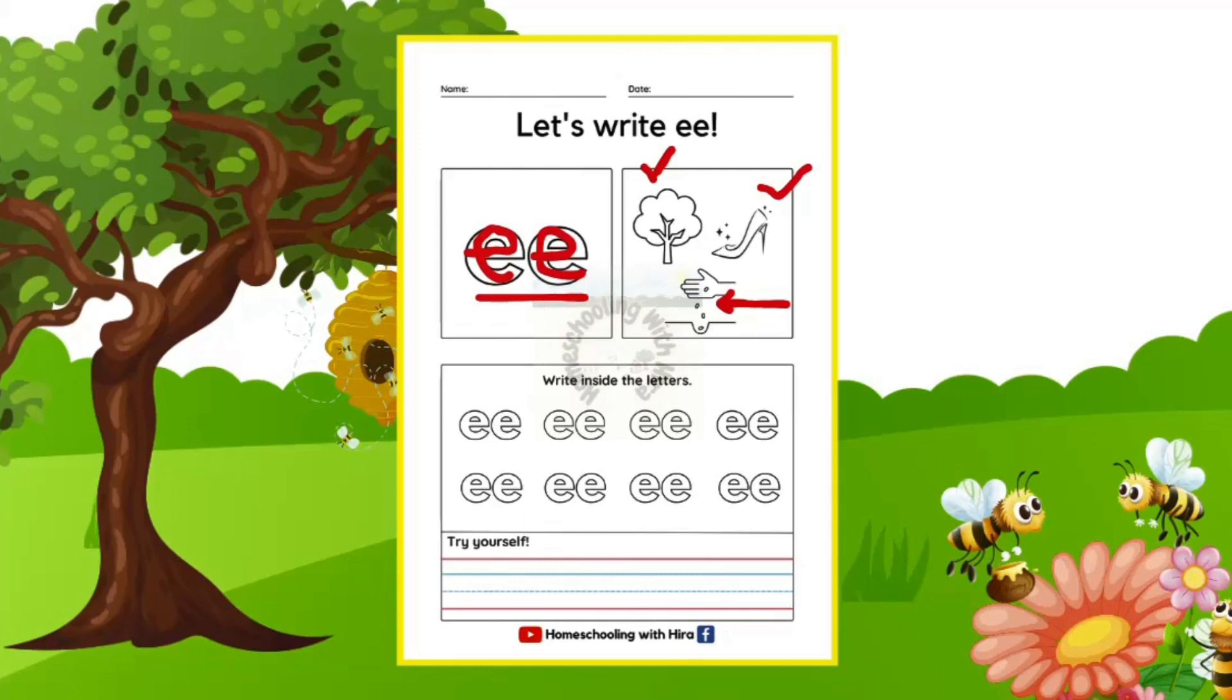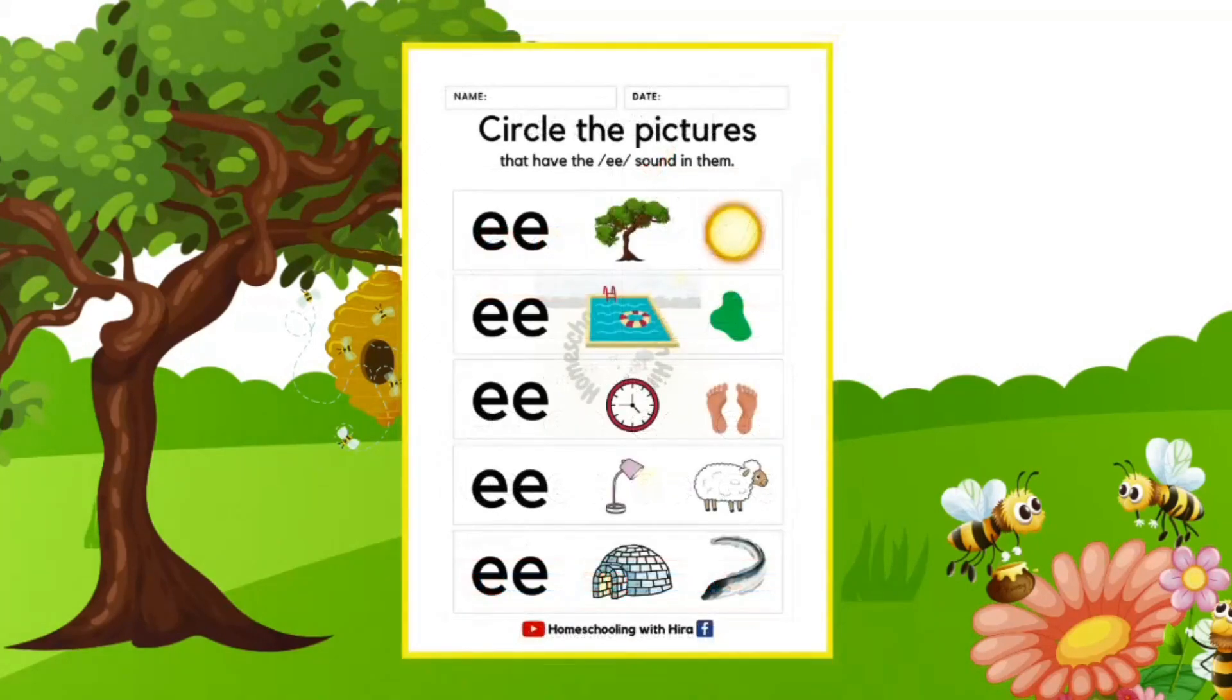And if you want to write E in the lines, you need to use only the blue lines to write E. E, E. And there you go. Please finish this page yourself and then continue to the next worksheet.